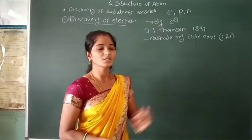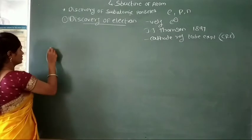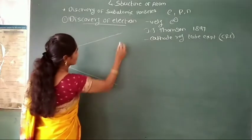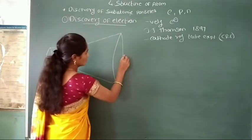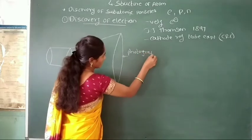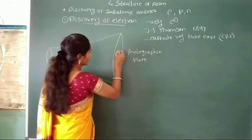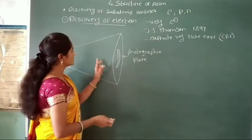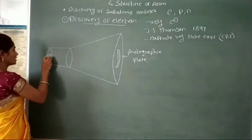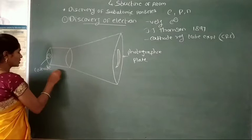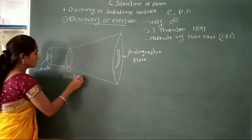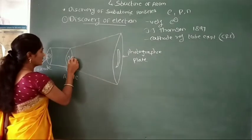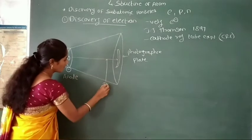Now we draw the experimental diagram. Here, this is a photographic plate on which the rays strike. On this CRT experiment, one side has a positive terminal called the cathode, and here is the anode with a hole present. These rays pass through the hole in the anode. Then this is the original path of these rays.